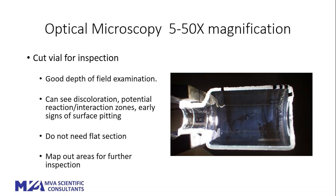We cut the vials in half, labeling the two halves A and B. You can see that on the top edge of the half vial there are small strips of adhesive used as markers in the SEM to maintain reference points. Starting with optical microscopy, you can see some dark areas and splotchy regions toward the base of the vial at the heel area. Those would be the areas we'd take a closer look at with higher magnification.